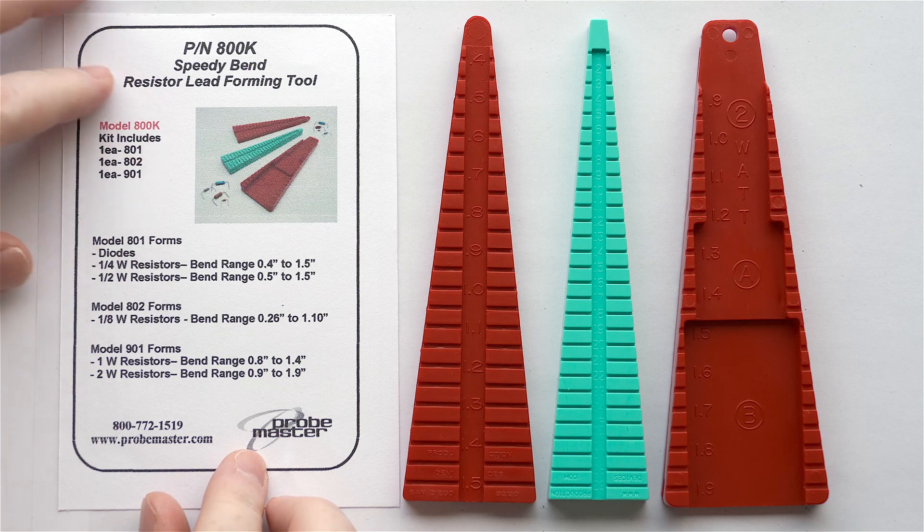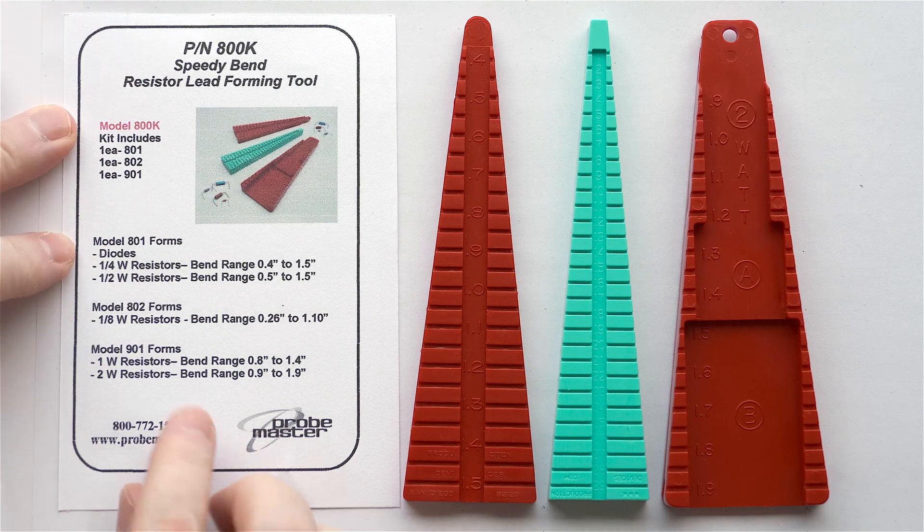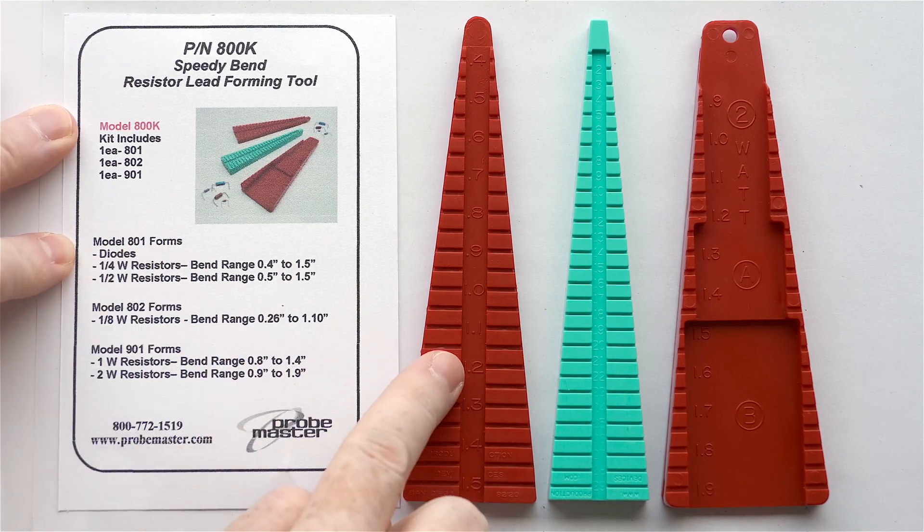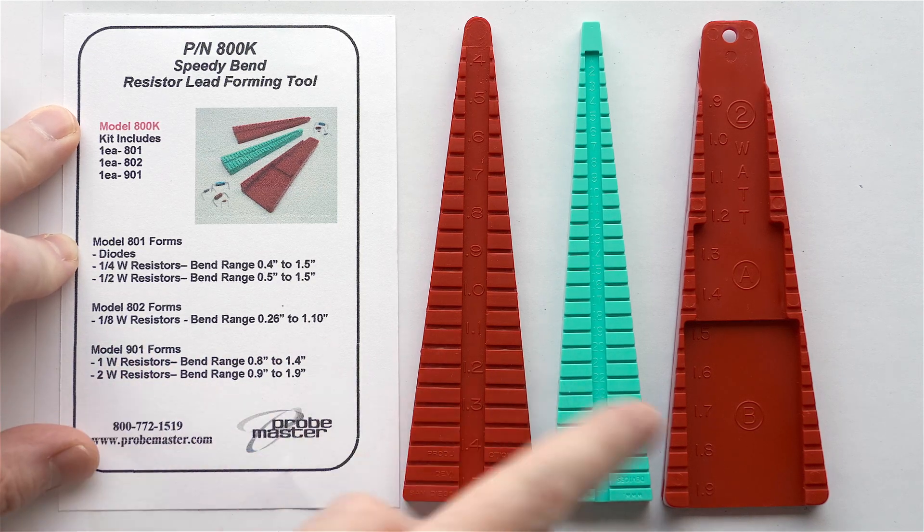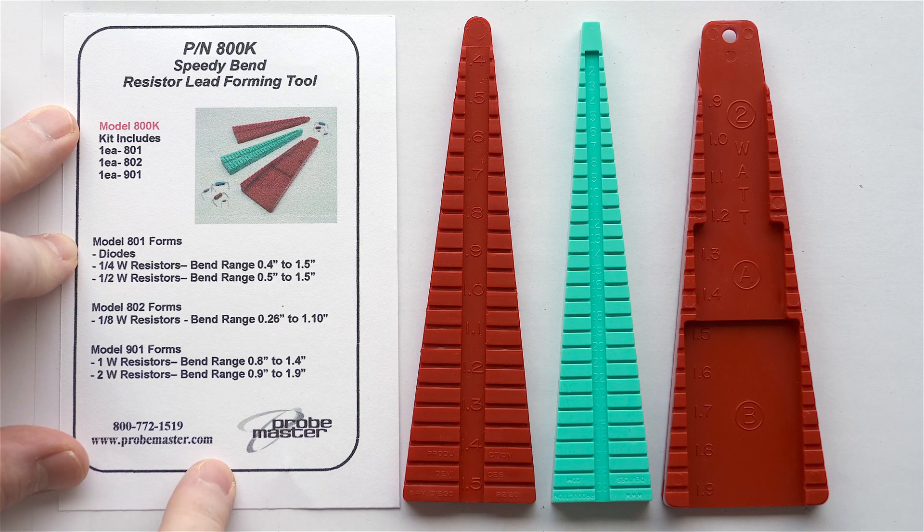The Speedy Bends kit comes with this information guide, very simplistic. It talks about model 801, which is this one, 802, which is this turquoise one, and model 901, which is the big fat guy over here.